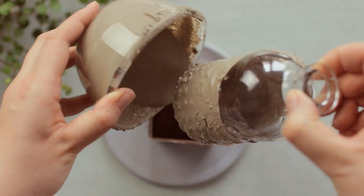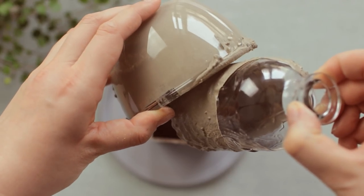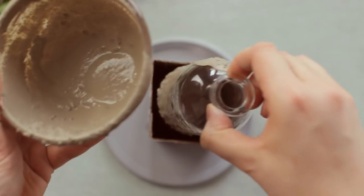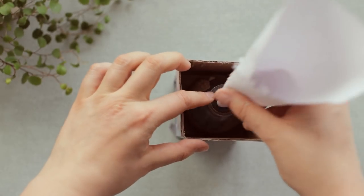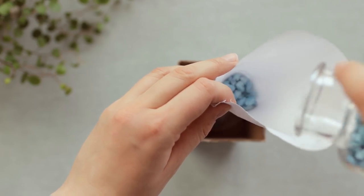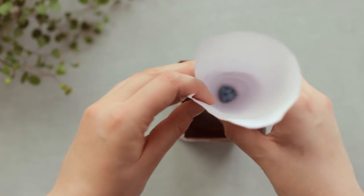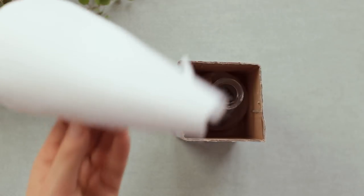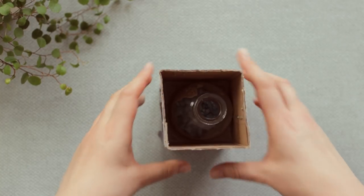If your bottle doesn't want to sit still and keeps moving upwards, you can simply pour in some stones or something else that is heavy inside. Here I made a little funnel using some paper and then poured in small stones inside the bottle. And now it's time for it to dry.